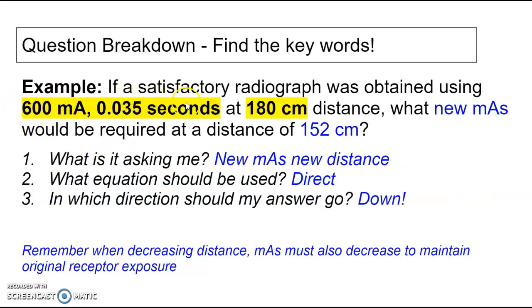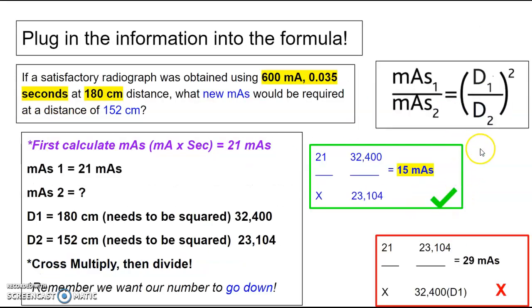So here's our keywords. So mA and time at an original distance. It's asking me for a new mAs at a new distance. We're going to plug this in. The difference for this one is you have to do your mAs calculation first. So before you do anything else, I want you to calculate mAs. And remember, that's mA times seconds. So 600 mA times the seconds gives me 21 mAs. So that determines my mAs 1.